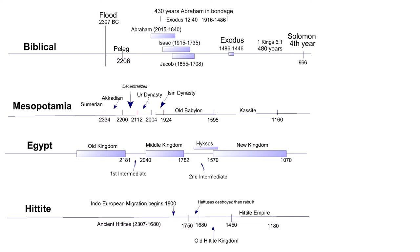The height of Old Babylon's power was under Hammurabi from 1792 to 1750, which coincides with the time in Egypt when the 12th dynasty had just fallen, plunging Egypt into the intermediate period of disarray.